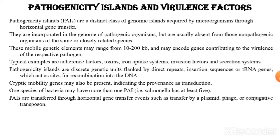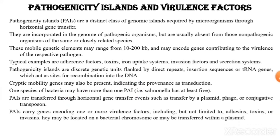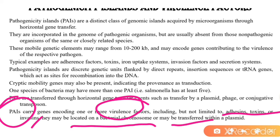PAIs are transferred through horizontal gene transfer events such as transfer by plasmid, phage, conjugation, or transposition. Sometimes bacteria that lack the PAI factor acquire it through horizontal gene transfer from another bacterium. PAI genes encode virulence factors including but not limited to adhesins, toxins, or invasins. They may be located on a bacterial chromosome or may be transferred within a plasmid.